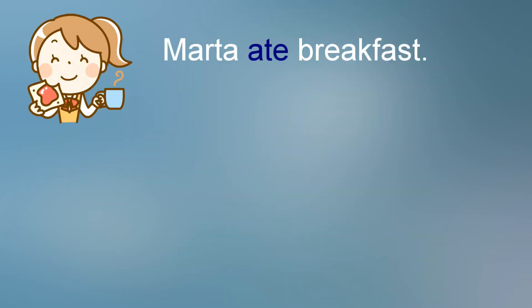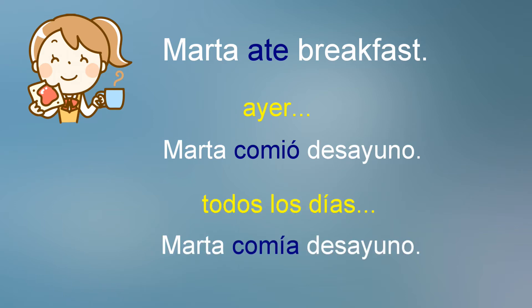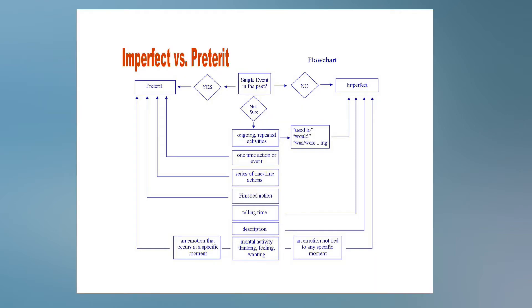In our earlier example, 'Marta ate breakfast,' there were two concepts behind the verb 'ate.' One was that it was only yesterday that she ate breakfast, and the other was that she ate breakfast every day. Let's decide which form to use by referring to the flowchart. We start in the square at the top and ask ourselves: does the verb express a single event in the past? If yes — as in yesterday at 7:30 — the arrow points us to the preterite.